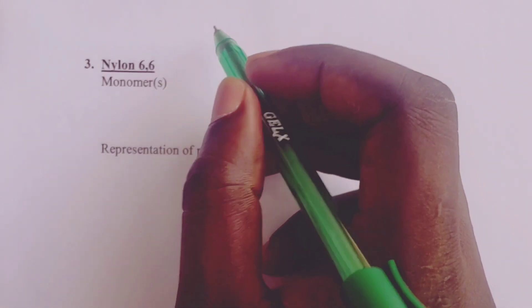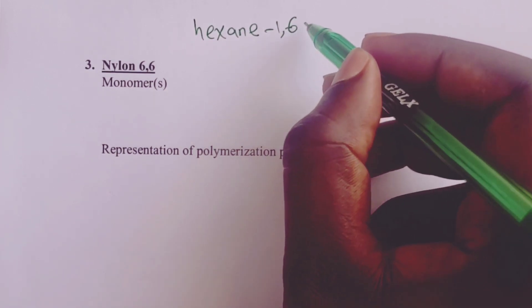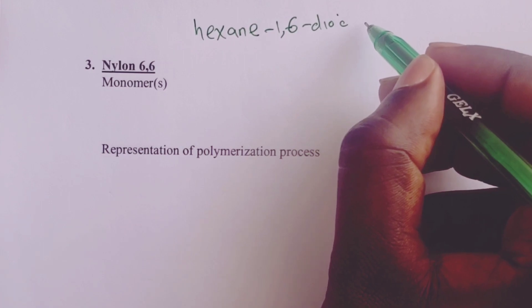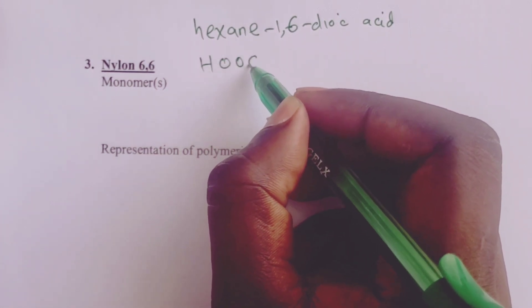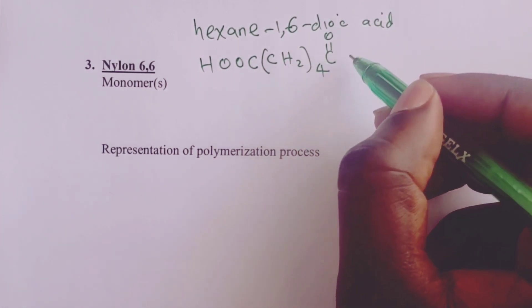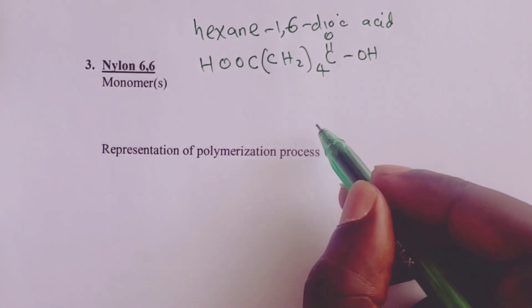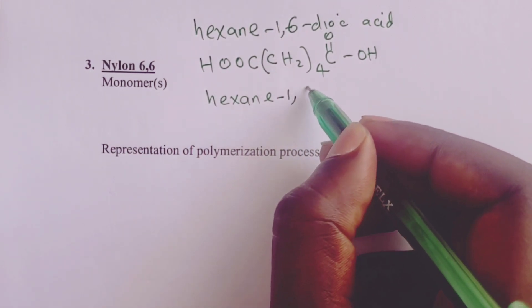Our third condensation polymer is nylon 6-6. Nylon 6-6 is an example of a polyamide made by polymerizing an amide. There are two monomers. The first is hexane-1,6-dioic acid, which has the formula HOOC-(CH2)4-C(=O)-OH. This monomer is reacted with a second monomer by the name hexane-1,6-diamine, which has the formula H2N-(CH2)6-NH2.